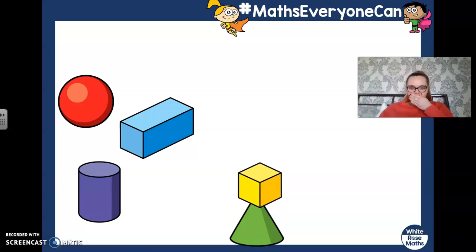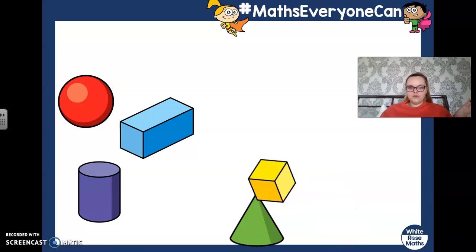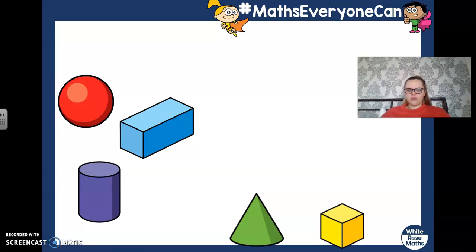But, uh-oh. What's going to happen? What happened? Let's go back. What happened? The cube has fallen off. Oh my goodness. I wonder if you know why the cube has fallen off the cone.